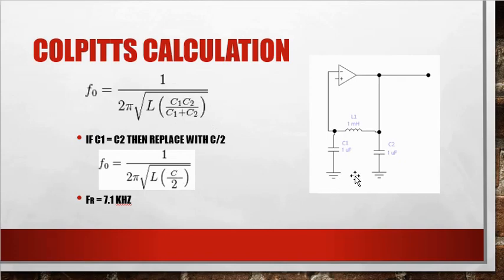So if we have an example here, we have L1 is 1 millihenry. C1 is 1 microfarad. C2 is 1 microfarad. We end up, after we put it into this formula, we'll get the frequency of resonance is 7.1 kilohertz.